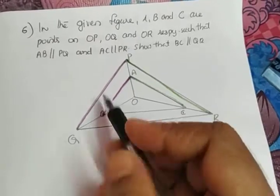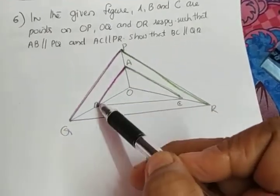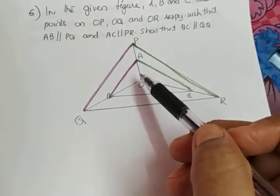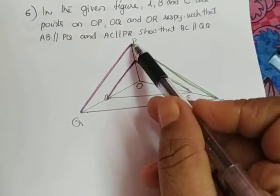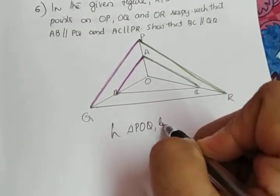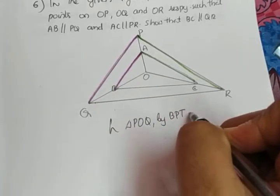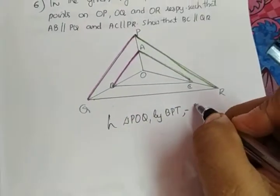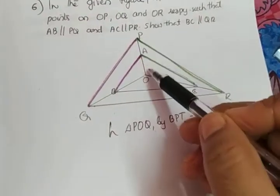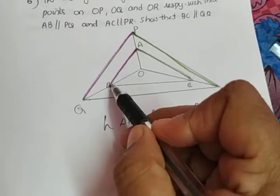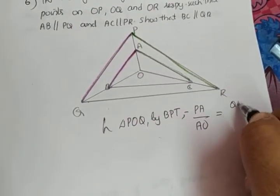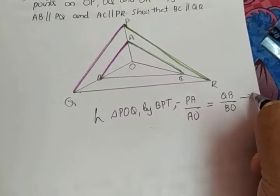We will take the first condition: AB parallel to PQ. The triangle in which these two lines are parallel is triangle POQ. So in triangle POQ, by BPT, we can write: PA divided by AO is equal to QB divided by BO. Let that be equation number 1.